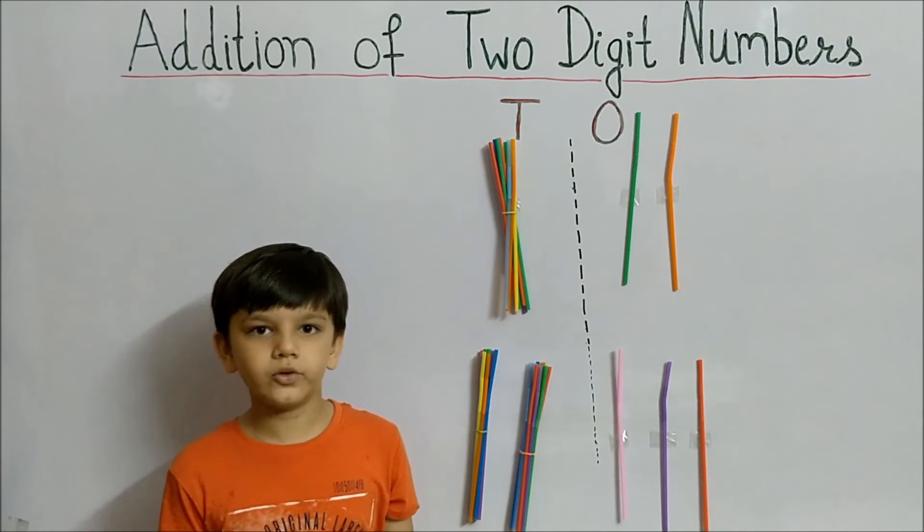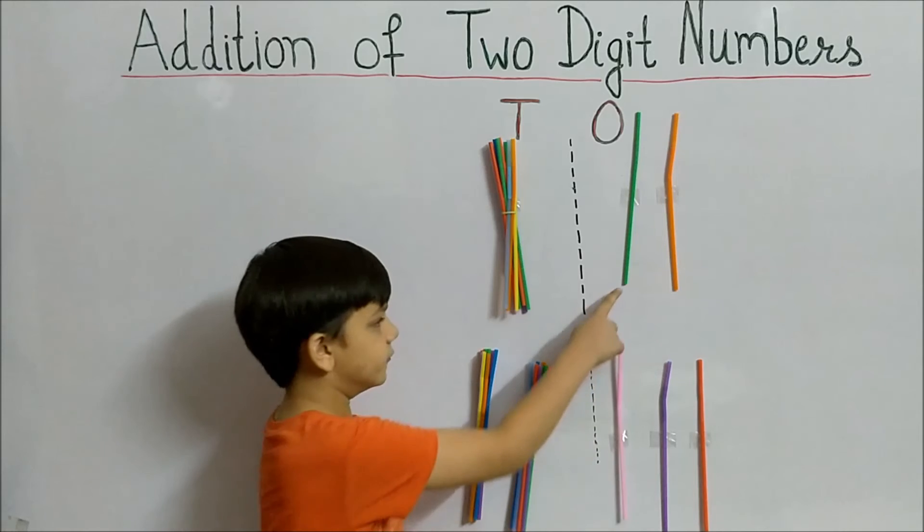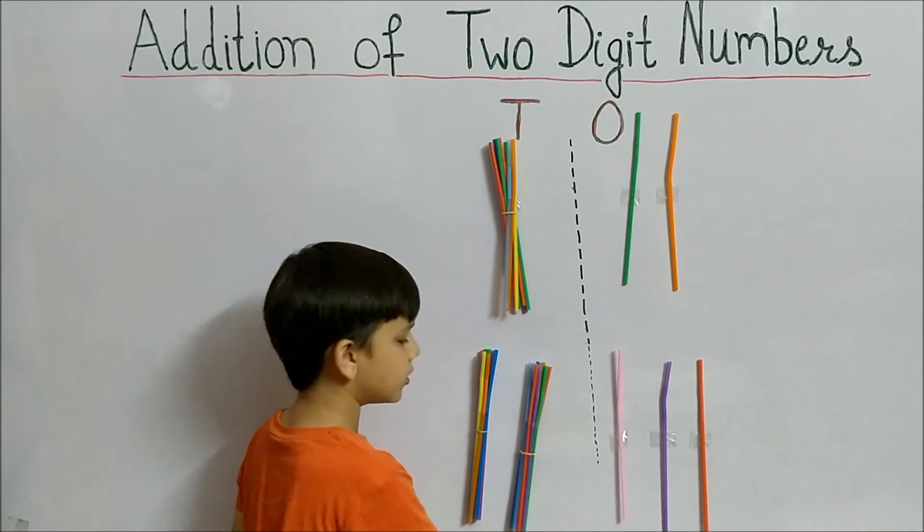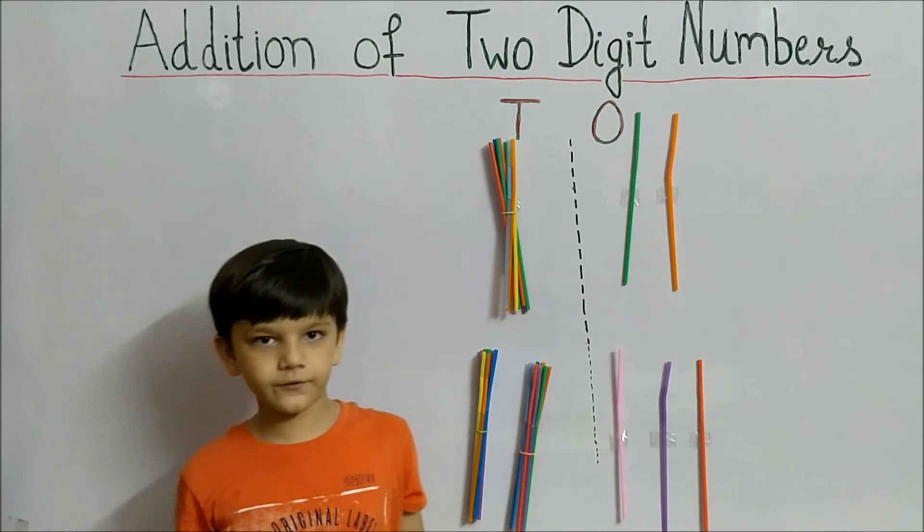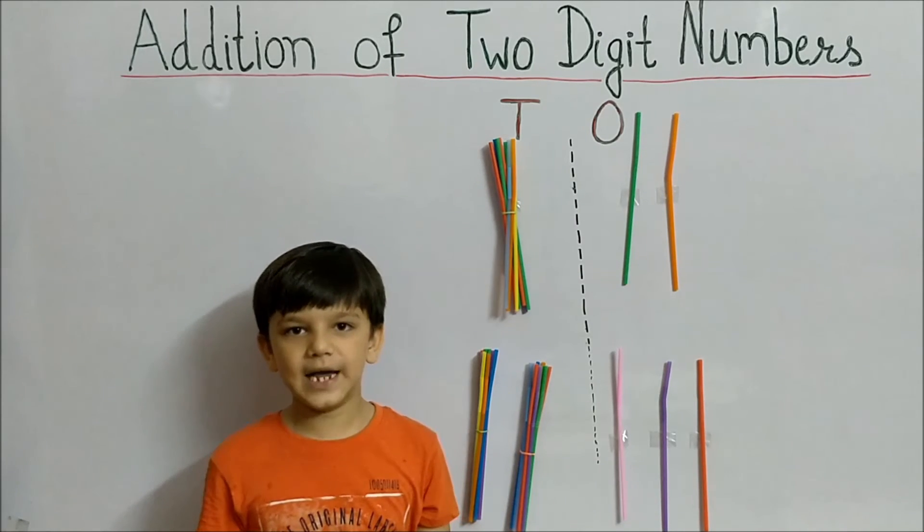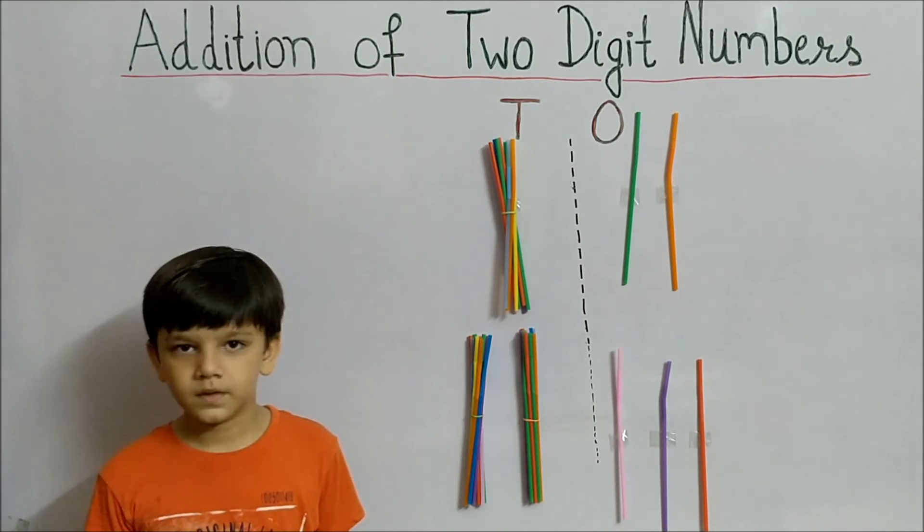First count loose straws: 1, 2, 3, 4, 5. Therefore, we have 5 loose straws.